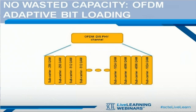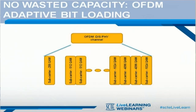The narrow subcarriers of OFDM can be individually adapted to the channel conditions, so one subcarrier can have 4096 QAM while another might only have 64 QAM due to ingress in that part of the spectrum. Or the subcarrier might be nulled entirely, which is like ingress cancellation on steroids.